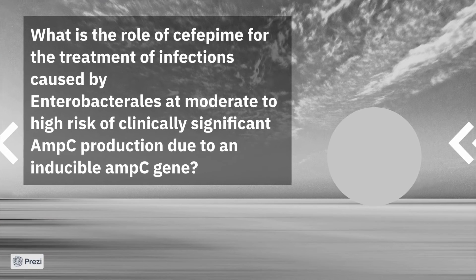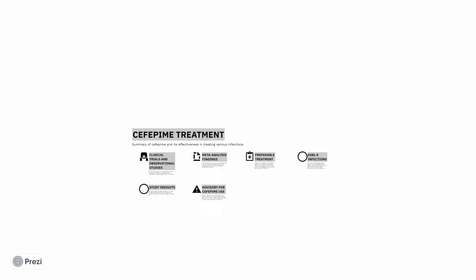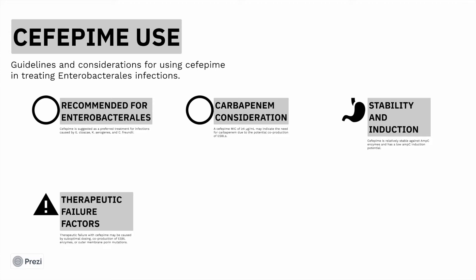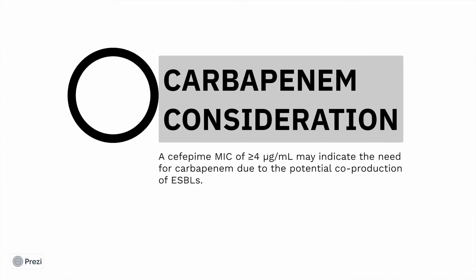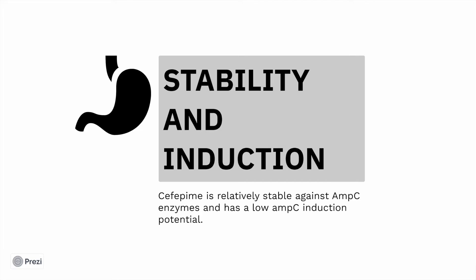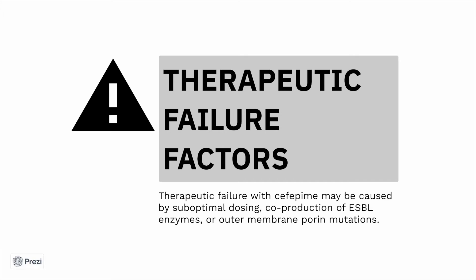Next is the role of cefepime in infections where there is clinically significant AMP-C. Cefepime is suggested as the preferred treatment for infections with Enterobacter cloacae complex, Klebsiella aerogenes, and Citrobacter freundii. Carbapenems should be considered if the MIC is more than 4. Cefepime is stable against AMP-C and has low AMP-C induction, making it an ideal agent. Therapeutic failure with cefepime may be caused by suboptimal dosing, co-production of ESBLs, or outer membrane porin mutations.